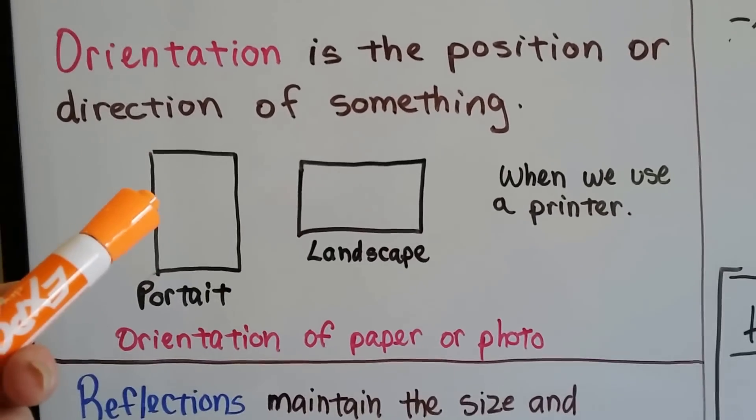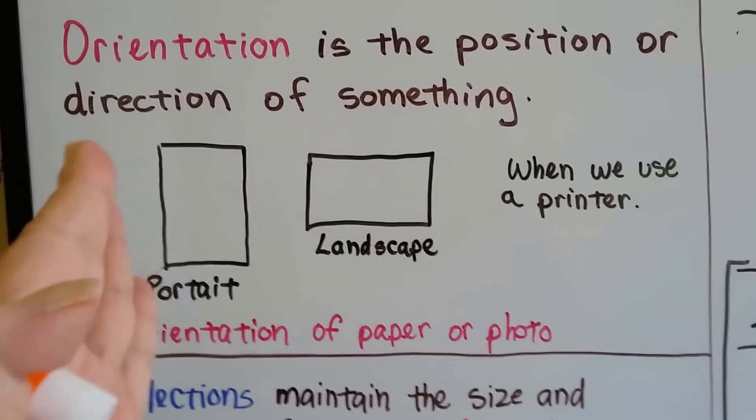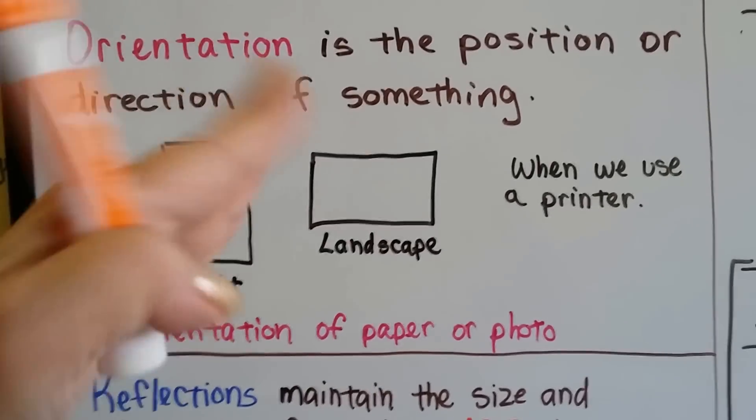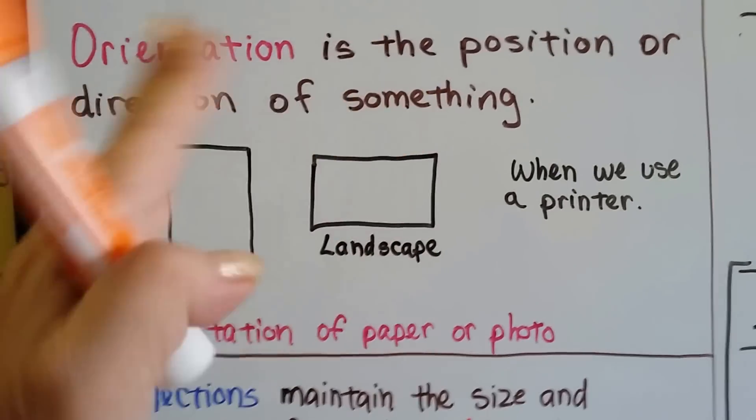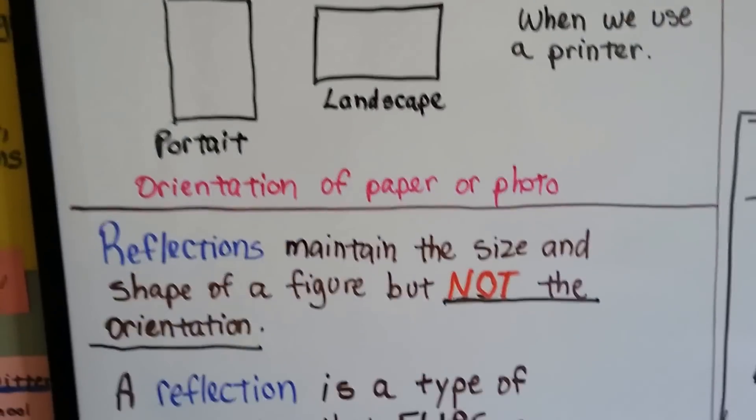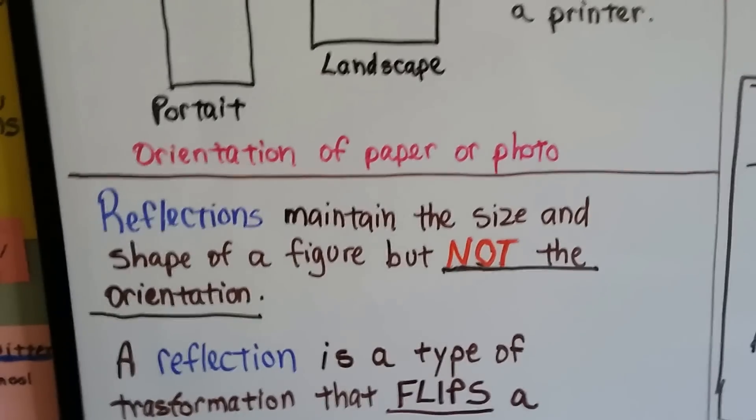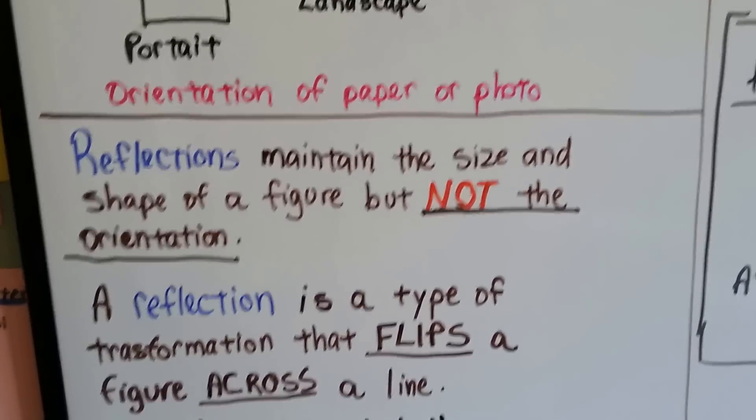The paper didn't change size, it didn't change shape, it just changed its orientation, the direction it was in. Well, reflections maintain the size and shape of a figure, but not the orientation.